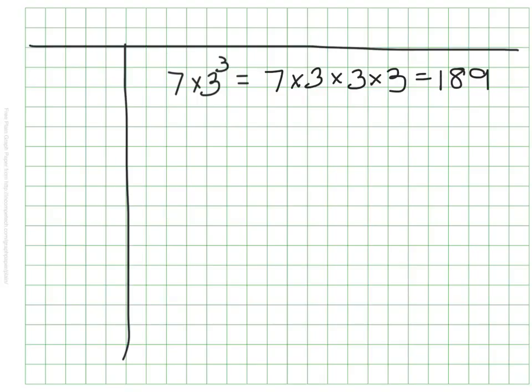How'd you do? My answer was 189. 7 times 3 to the 3rd power, I found, was 189.